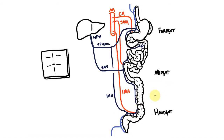There's also a portosystemic anastomosis between the systemic veins of the anterior abdominal wall and the paraumbilical veins that used to drain to the liver.